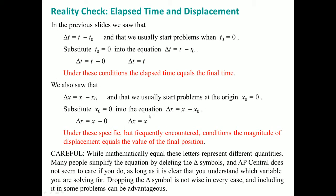Let's look at elapsed time and displacement. Delta T can be seen as T minus T-naught, but T-naught is normally zero because we start our time at zero. If we do that, your delta T is really just T. Understand that your elapsed time — how much time has changed — is really equal to the final time. Similarly, delta X equals X minus X-naught, but since X-naught is also usually zero, delta X should equal X. Make sure you're careful — these are the most common starting conditions.